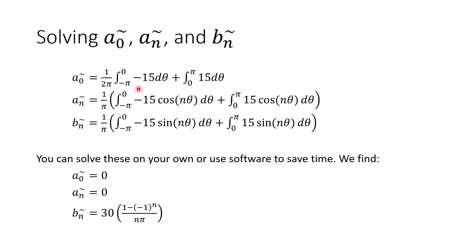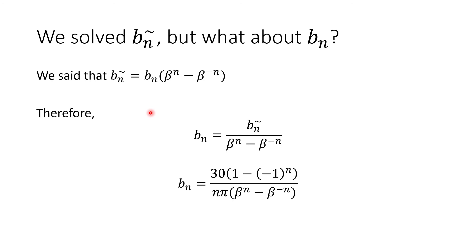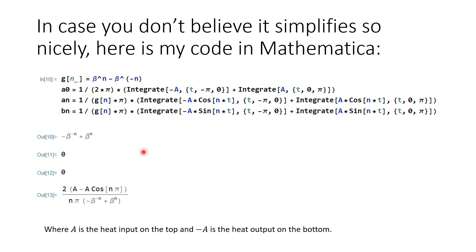Solving for the Fourier coefficients - I used software to simplify the computation. We find b_n-tilde has a specific value, and since b_n-tilde equals b_n times (beta^n minus beta^(-n)), we can divide through to get b_n. The mathematical code for setting up the two integrals is shown here - you could also use a piecewise function but I found it easier to create two separate integrals. This gives us the constants we need.